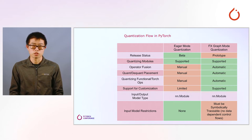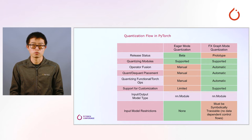Eager mode quantization is implemented through module swapping and it doesn't require a graph representation of the model. So it has no restriction on the model to be quantized, but it requires users to manually modify the model and to reason about the details of the quantization process.